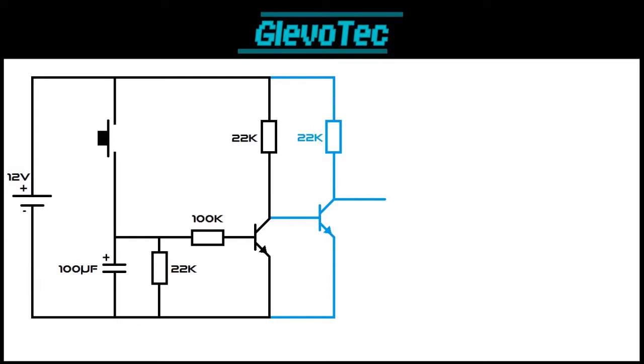Now imagine the transistor as a switch. We assume it's open now. That means the supply voltage reaches the second transistor. This causes that transistor to close. The voltage at the output is now 0 volts.